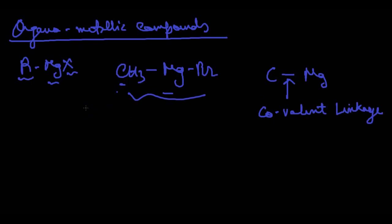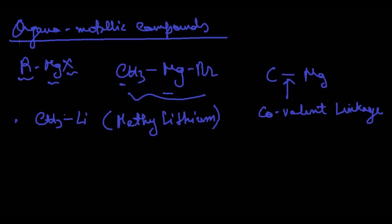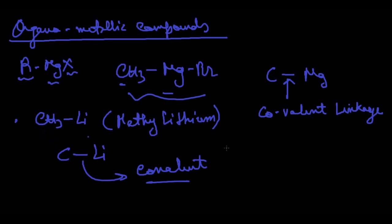Other examples of organometallic compounds include alkyl lithium — for instance, methyl lithium (CH₃Li) — where there is a covalent bond between the carbon atom and lithium. Similarly, dimethyl zinc, (CH₃)₂Zn, is also an organometallic compound because carbon is covalently attached to zinc.